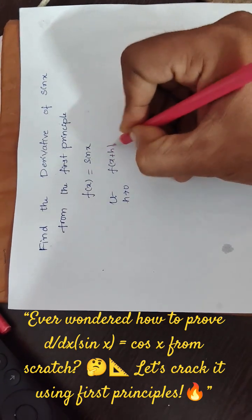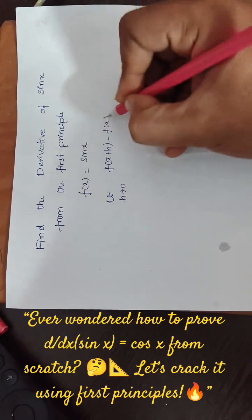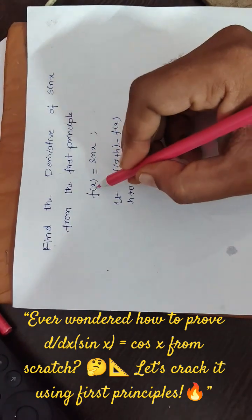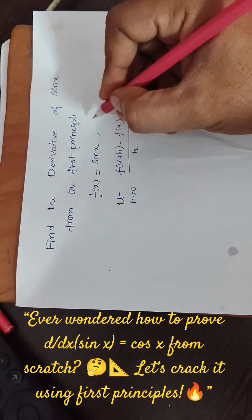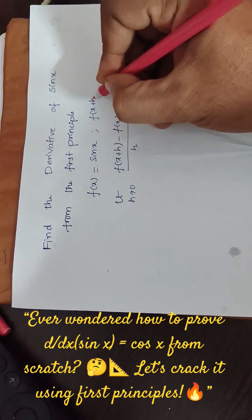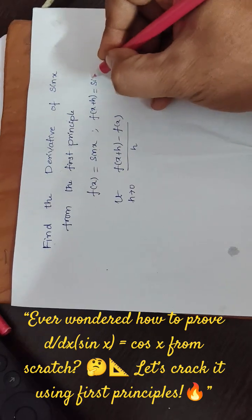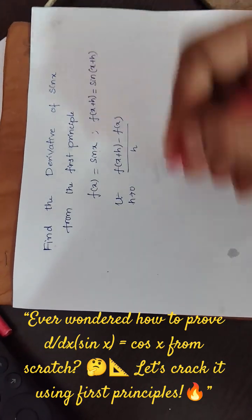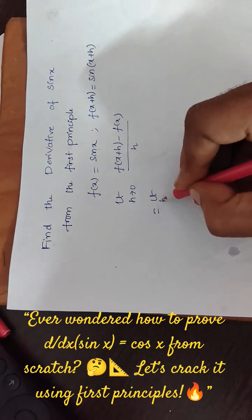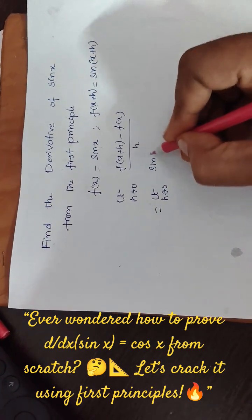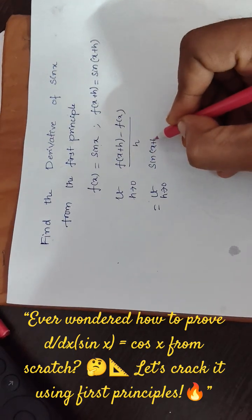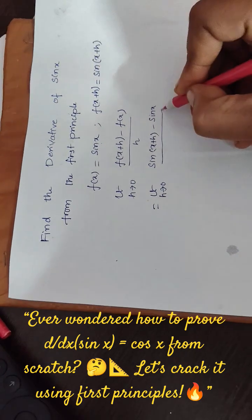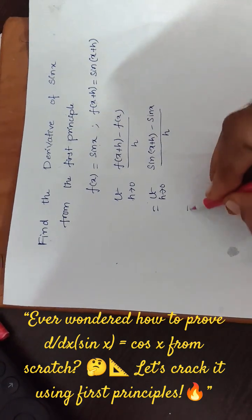That means here f of x is sin x, then f of x plus h is nothing but in place of x you have to write x plus h. So here, limit h tends to 0, that is sin of x plus h minus sin x by h.